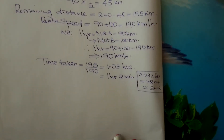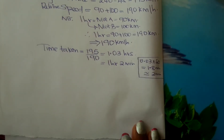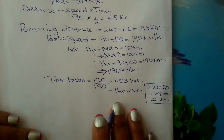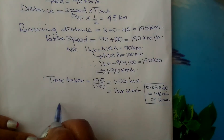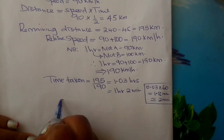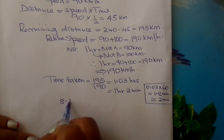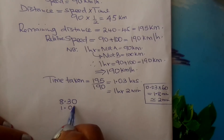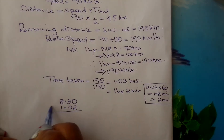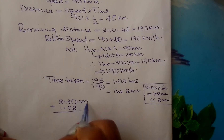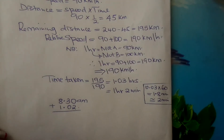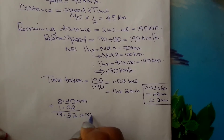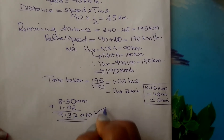Now find the time at which they met. Starting from 8:30 am — when both were travelling — add the time taken to meet, which is 1 hour and 2 minutes. This gives you 9:32 am. That is the answer to part A.